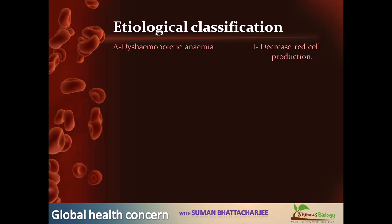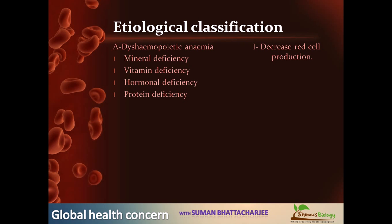In dyshematopoietic anemia, there is decreased maturation due to deficiency of maturation factors essential for erythropoiesis, halting erythropoiesis due to problems with maturation. It is usually caused by mineral deficiency like iron, zinc, selenium, and copper; vitamin deficiency like vitamin B12, folic acid, vitamin C, and pyridoxine; hormonal deficiency like anemia of renal disease, pituitary, and thyroid disorders; or protein deficiency problems.